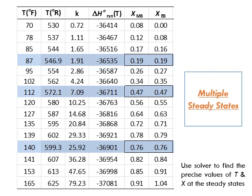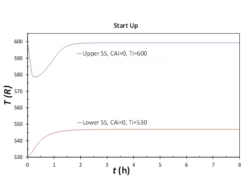Before we proceed, let's remember these three steady-states: three possible steady-states representing multiple steady-states. The steady-state temperature is around 550 Rankine for one, and around 600 Rankine for another. Here I'm showing you the temperature profile during startup. I obtained this from the coupled energy and material balance equations to find this profile.